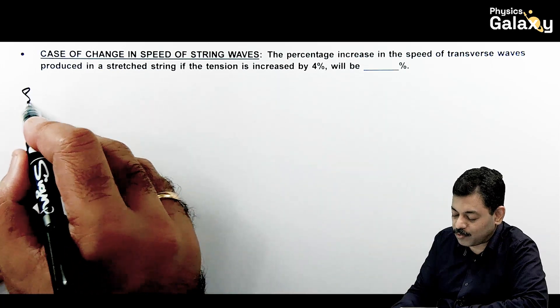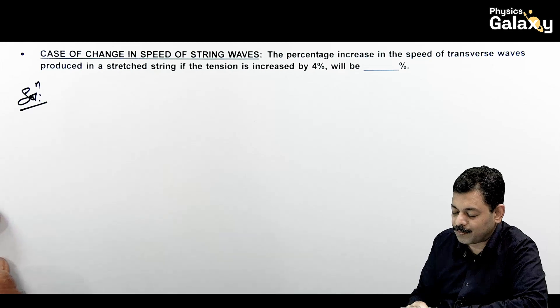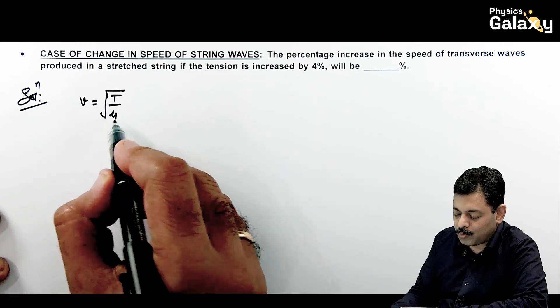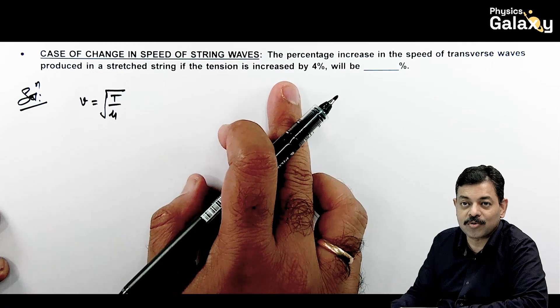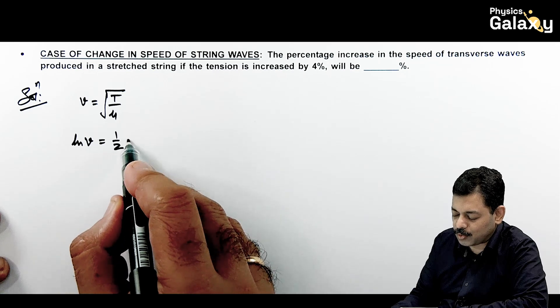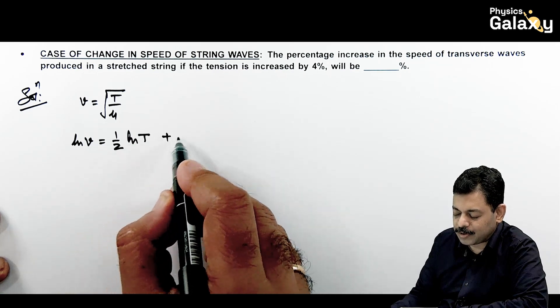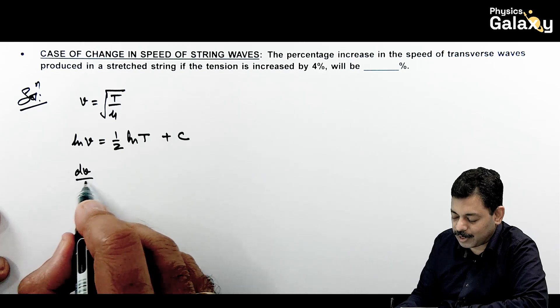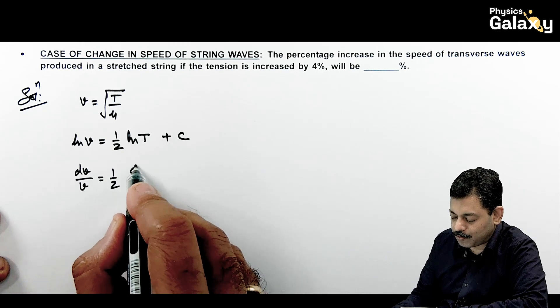What we need to calculate: wave velocity is given as root of T by mu. We can directly write if you take log on both sides, ln v equals one by two ln T plus a constant. If we differentiate this, it gives dv by v equals half of dt by t.